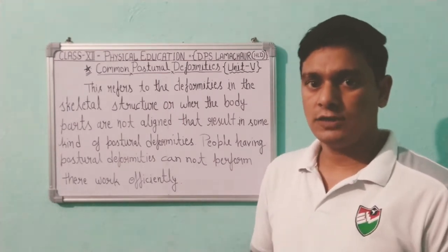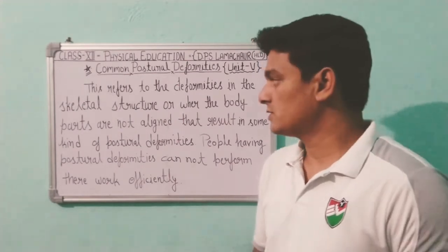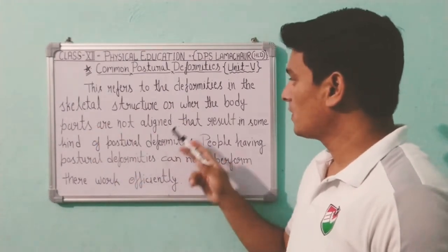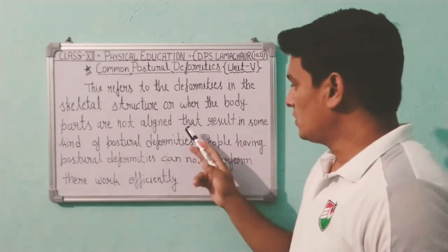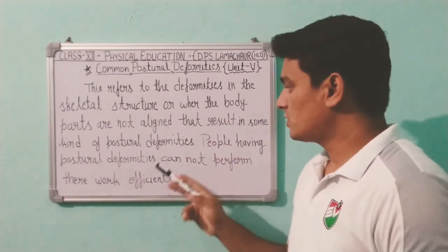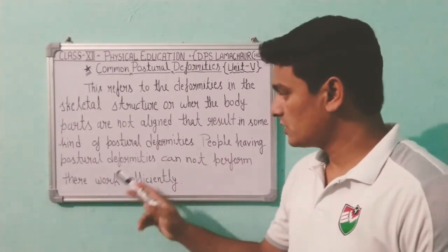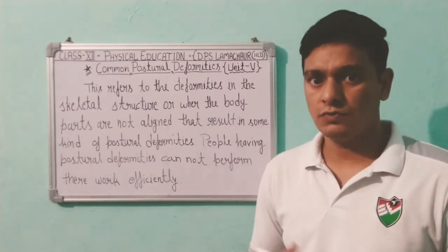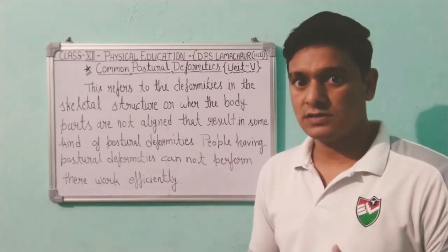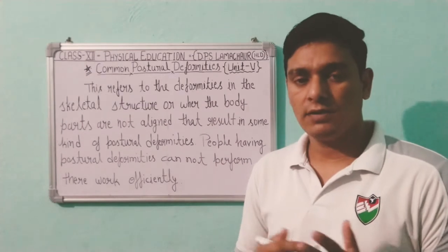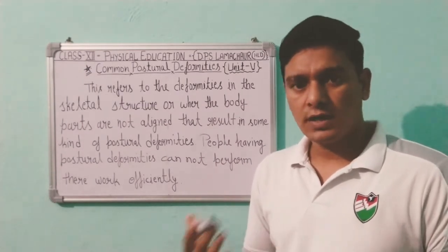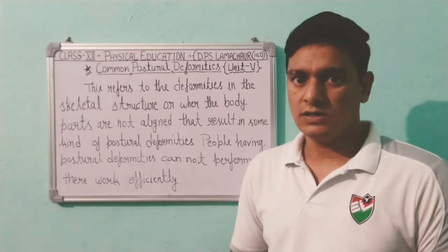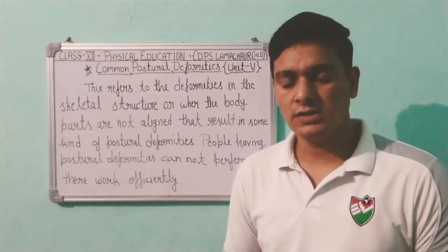Before discussing these, let me tell you what deformities are. Deformities refer to abnormalities in the skeletal structure where body parts are not aligned properly, resulting in some kind of postural deformity. People having postural deformities cannot perform their work efficiently. These are deformities of the skeletal system — the bones are not developed properly, possibly because of some diseases or illness.